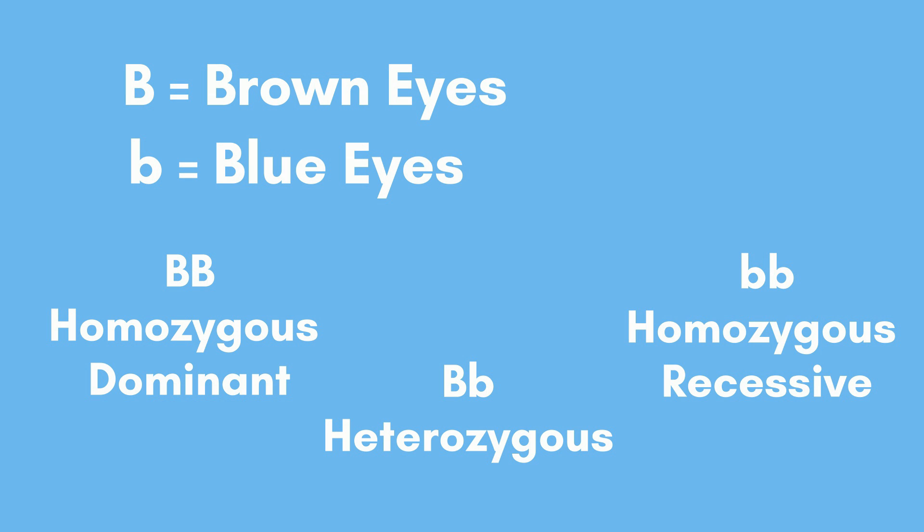A homozygous dominant genotype has two dominant alleles. A heterozygous genotype has one dominant and one recessive allele. And a homozygous recessive has two recessive alleles.